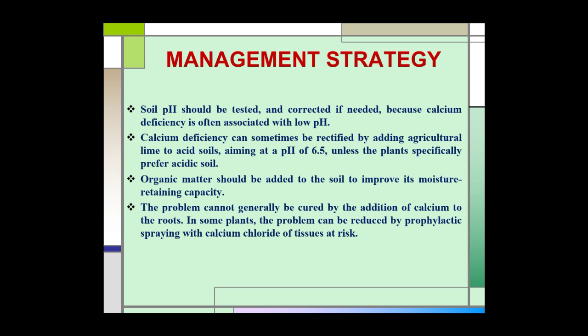Management strategy — how can we control calcium deficiency? Soil pH should be tested and corrected if needed, as calcium deficiency is often associated with low pH. Calcium deficiency can sometimes be rectified by adding agricultural lime to acid soil, aiming at a pH of 6.5, unless the plant specifically prefers acidic soil. Organic matter should be added to the soil to improve its moisture-retaining capacity. The problem cannot generally be cured by addition of calcium to the roots alone; in some plants it can be reduced by prophylactic spraying with calcium chloride on tissues at risk.